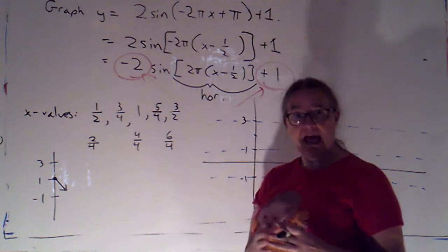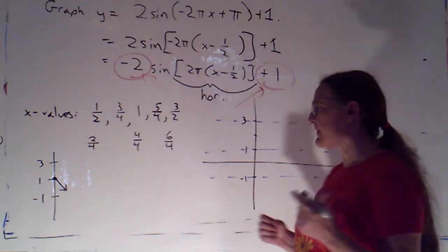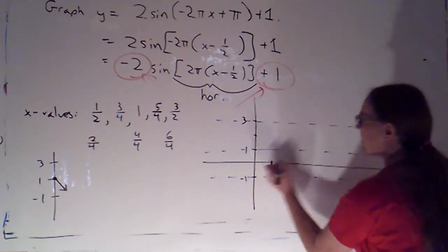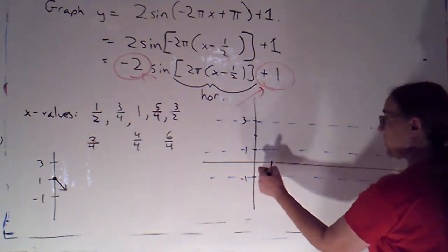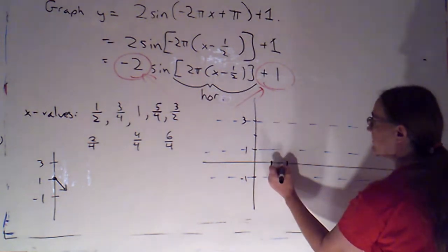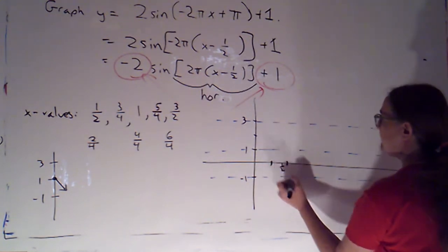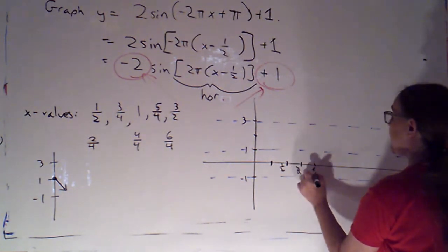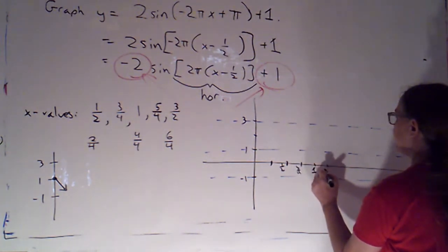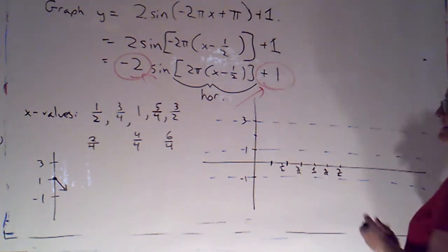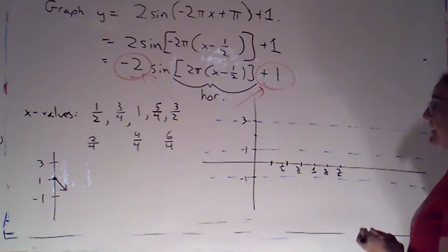Now, I know I'm starting at 1/2. But because my increment is 1/4, I'm going to let the tick marks on the x axis correspond to a fourth. So my starting point of 1/2 was 2/4. So that will be 2 tick marks over. So that's 1/2. And then we're at 3/4. And then 1. And then 5/4. And then 3/2. So those are my important x values.